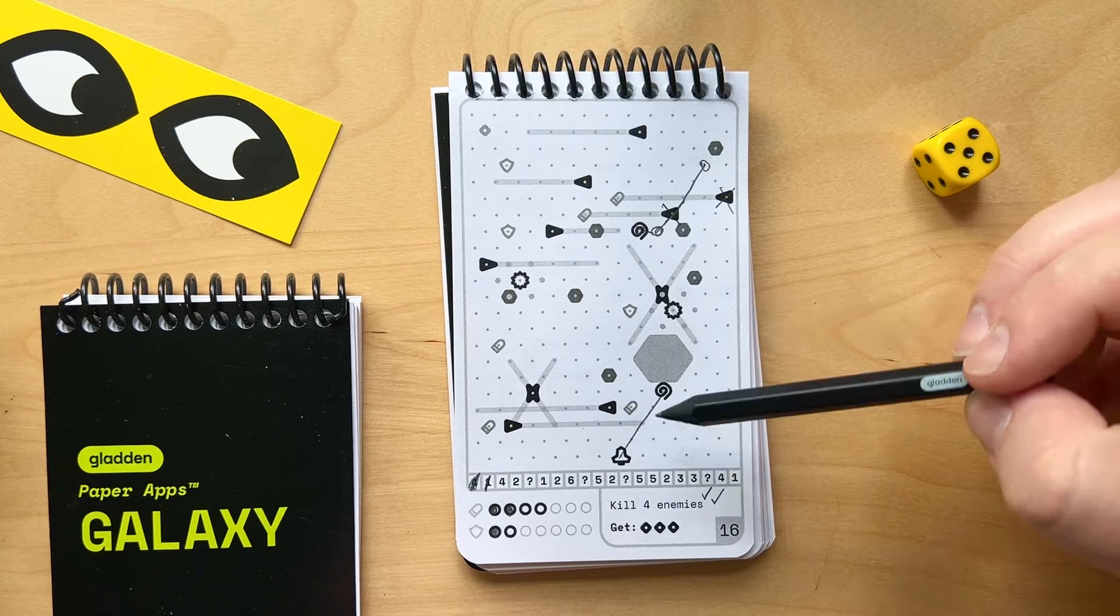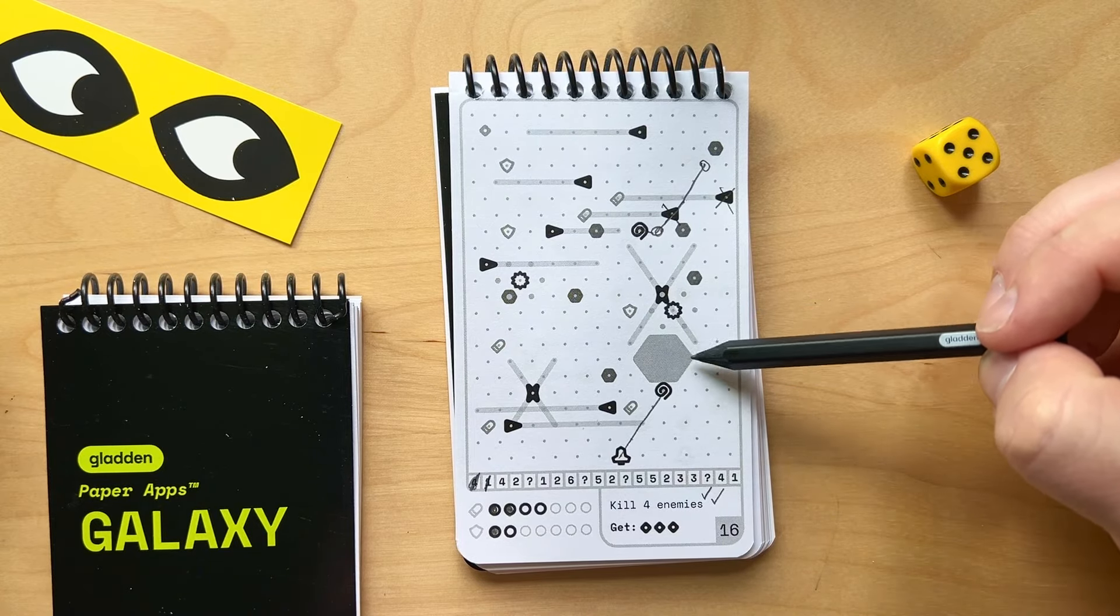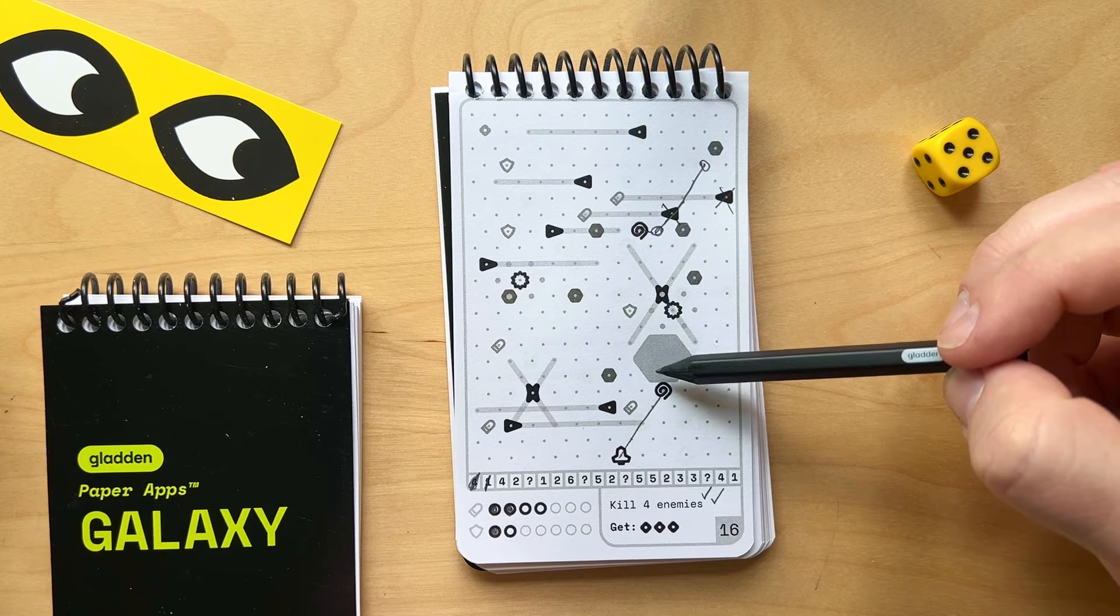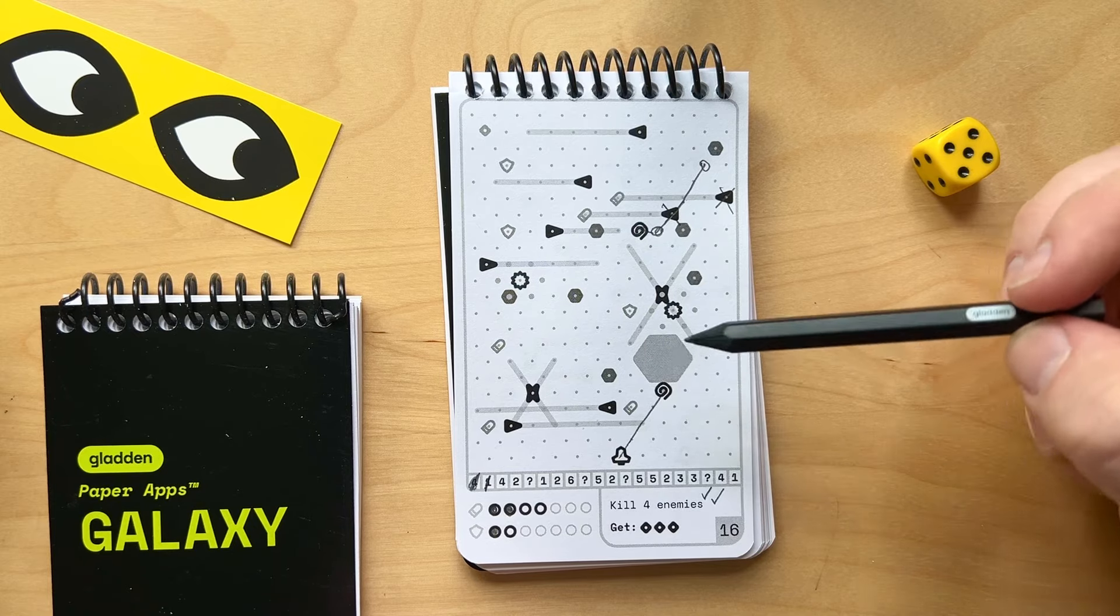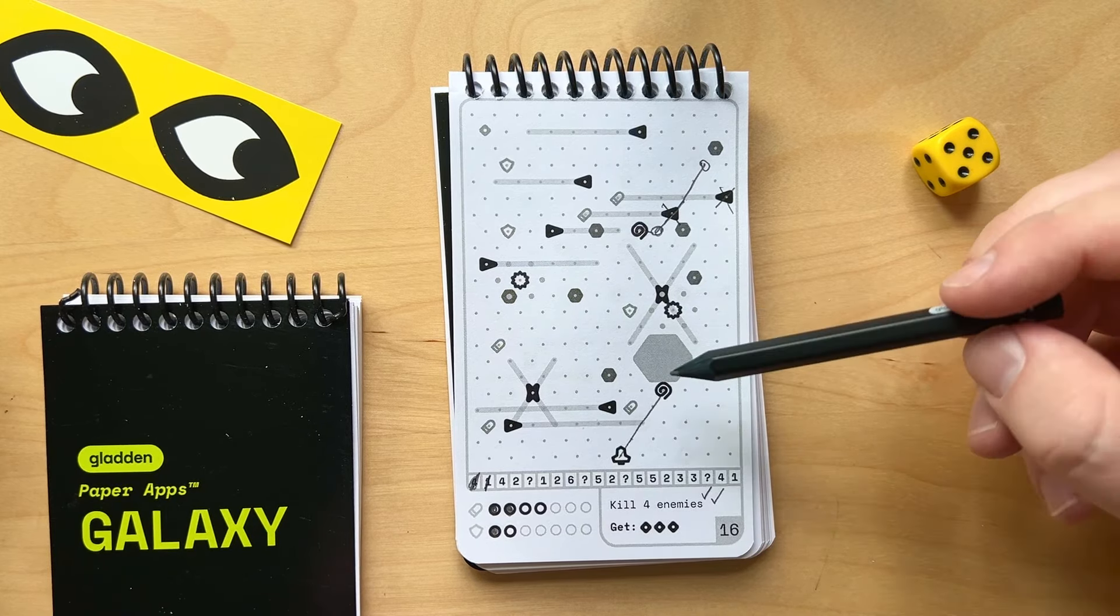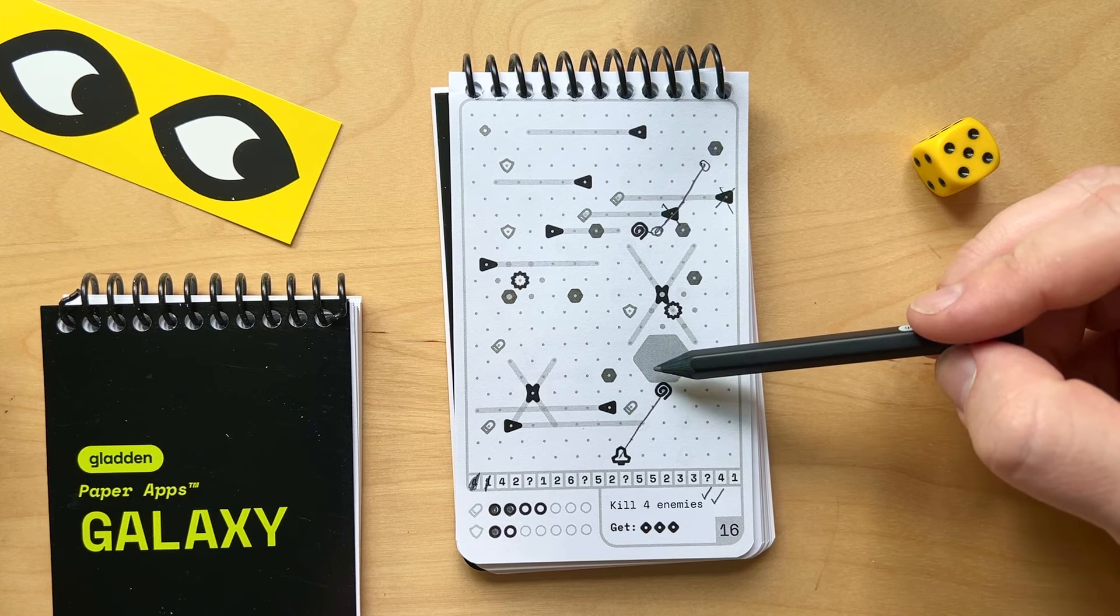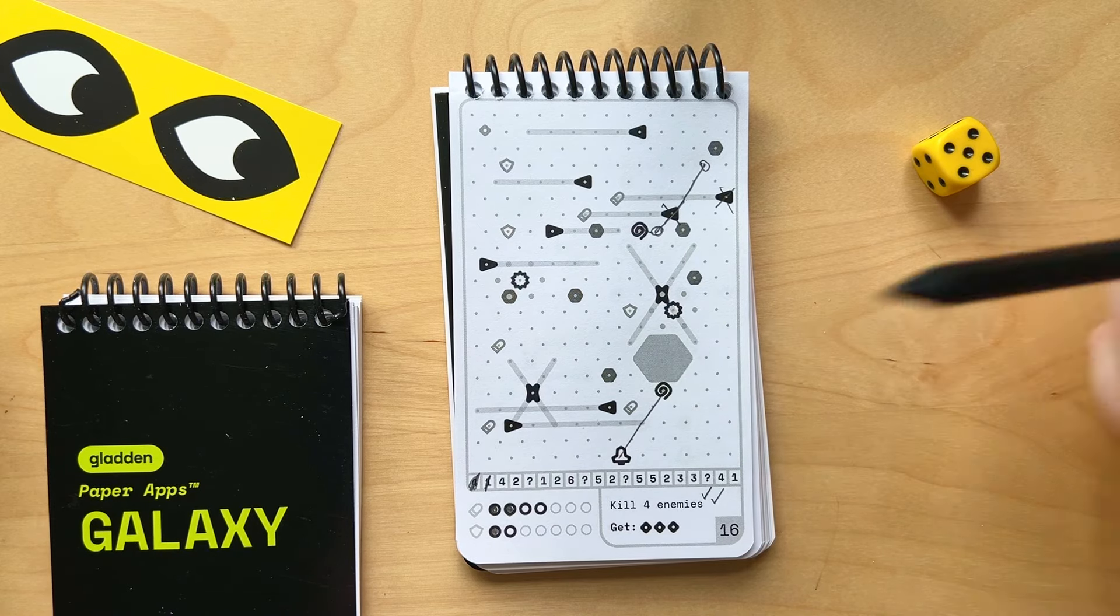Oh, and these are moons. So asteroids are the smaller ones. The big ones are moons. And they're just there to add some variety to the layout of the level. You can't shoot them or blow them up. You just have to fly around them.